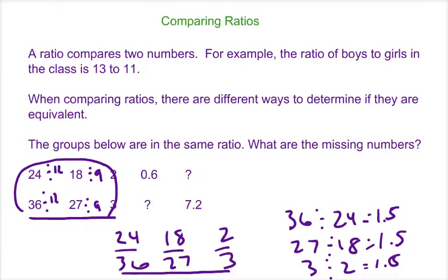So in order to figure out the missing numbers, if the bottom number is 1 and a half times the numerator, we can just multiply 0.6 by 1.5, and that would give us 0.9. And if we wanted to figure out the numerator of this ratio, we could divide 7.2 by 1.5, and that would get us 4.8. So the top numbers of each ratio, if you multiplied each of those by 1 and a half, you would get the denominator of that ratio.